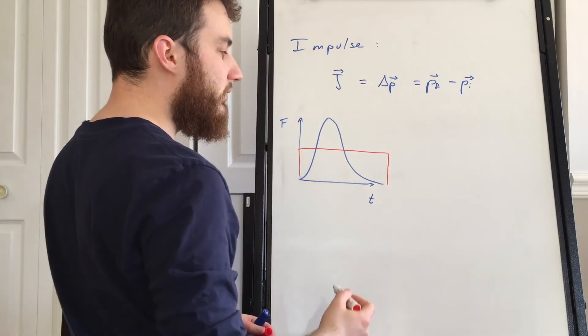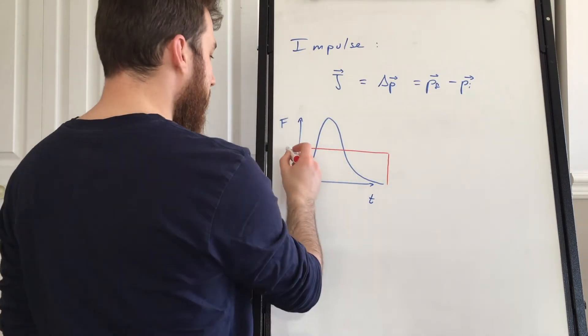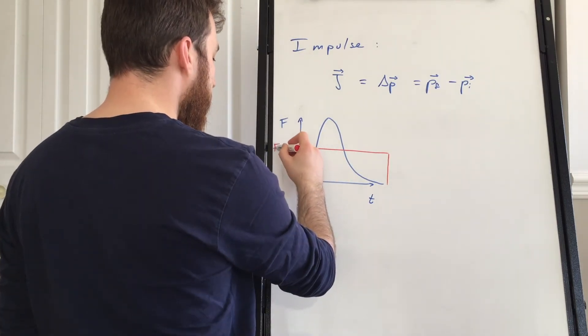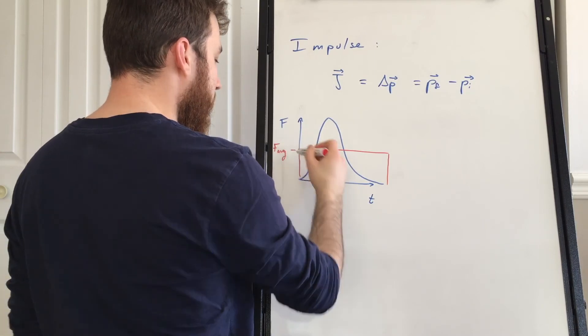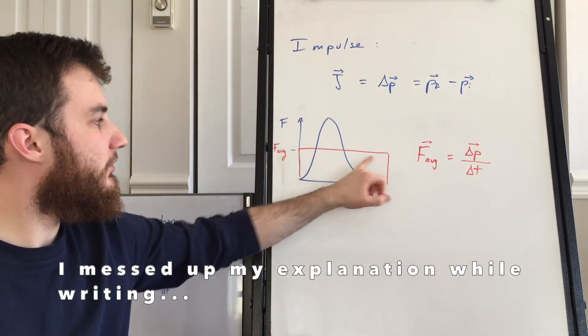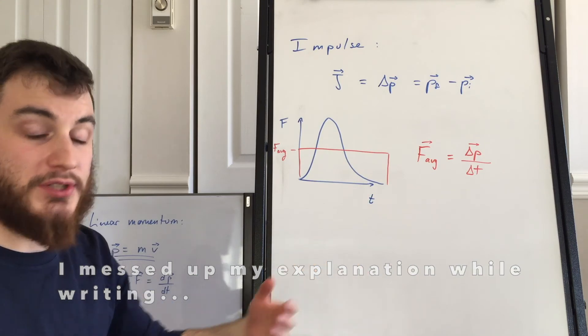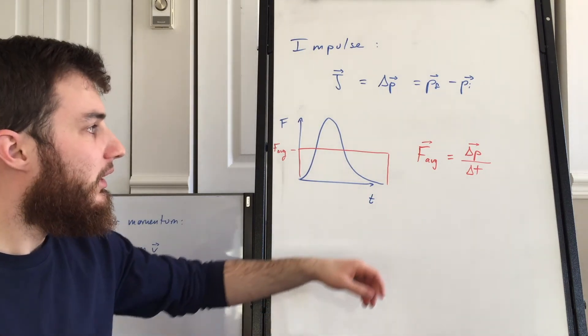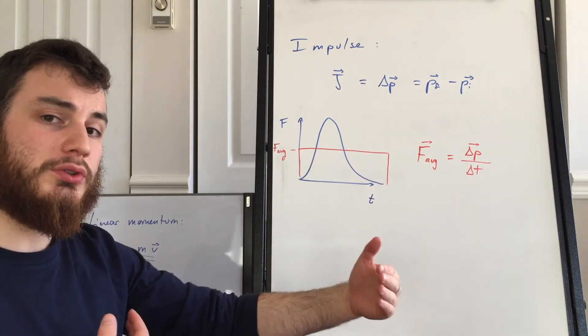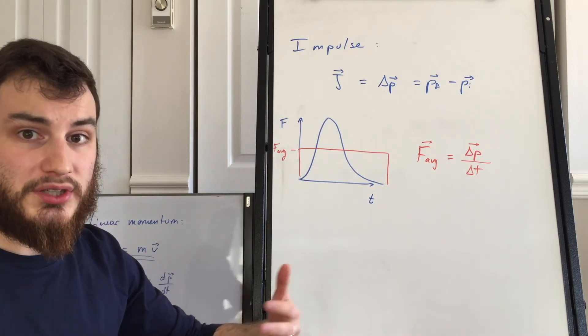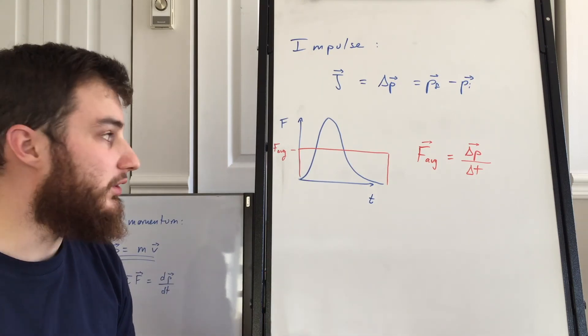we can find what the average force was, here in red. The average force felt during this collision by the object, by my marker, for example, is the change in momentum, the total change in momentum, divided by the time, the total time of the collision.